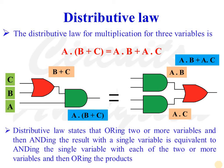Next is distributive law. The distributive law for Boolean algebra states that ORing two or more variables and then ANDing the result with a single variable is equivalent to ANDing the single variable with each of the two or more variables and then ORing the products. So for three variables A, B, and C: A AND (B OR C) is the same as (A AND B) OR (A AND C).